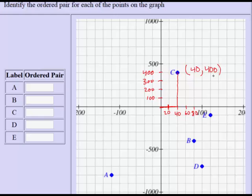And you would type this into MathAS just as shown there. It would be 40, 400. Now let's look at point A.